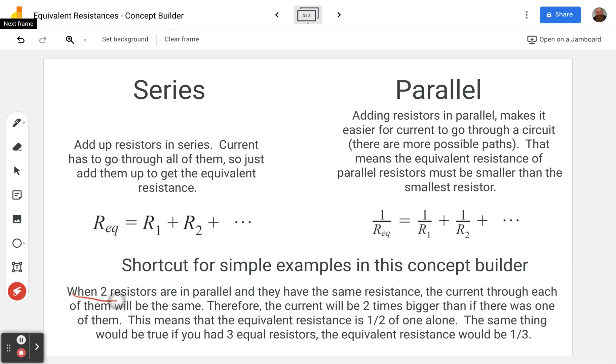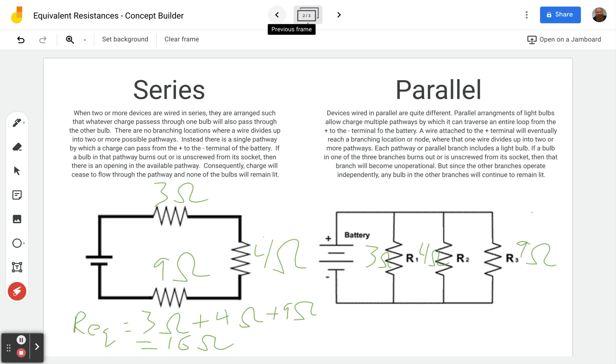This concept builder uses particular scenarios for parallel resistors that will allow you to do something that's simpler. So if we only have two resistors in parallel and they have the same resistance, then the current through each of them will be the same, right? They're in parallel so they're gonna have the same voltage. We learned that in the last concept builder. And so if they have the same voltage and the same resistance, they're gonna have the same current. So now with two of them, since we have two resistors, the current will now be two times bigger. Let's set up that scenario here so we can see that.